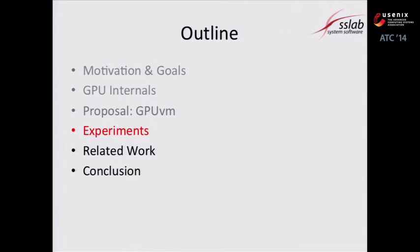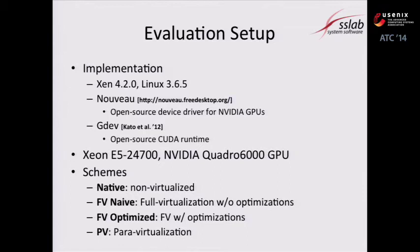We implemented a prototype with Xen and Linux, using the open-source driver Nouveau and the CUDA runtime kernel mode driver. We compare four schemes: Native is the baseline; FV naive is the fully virtualized version without optimizations; FV optimized is the fully virtualized version with all optimizations; and PV is the para-virtualized version.